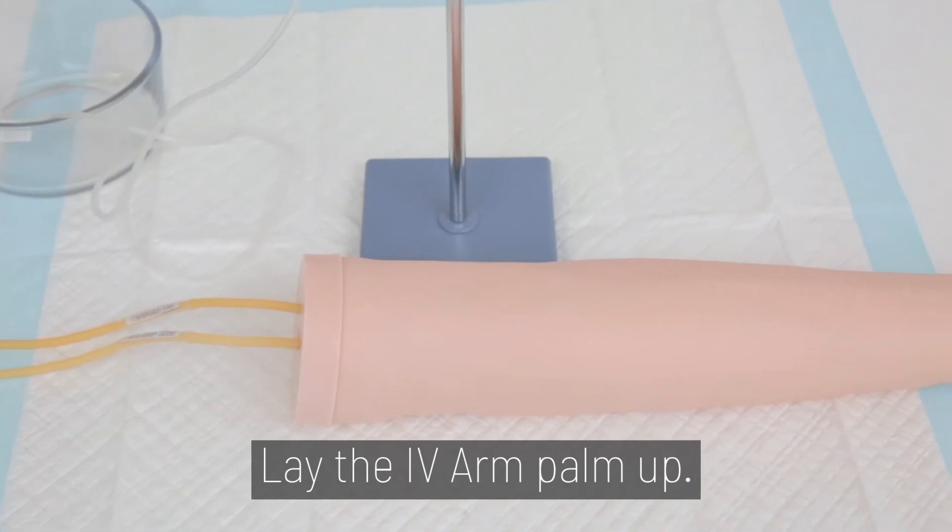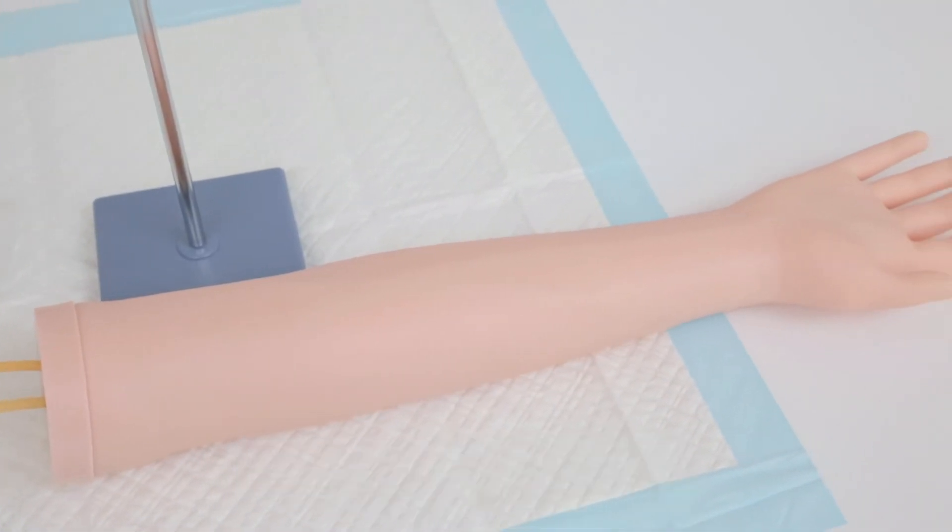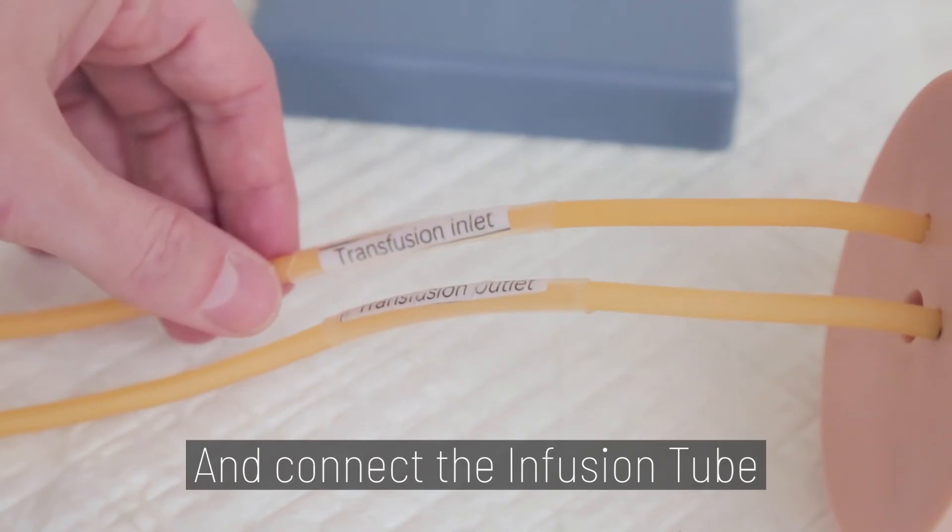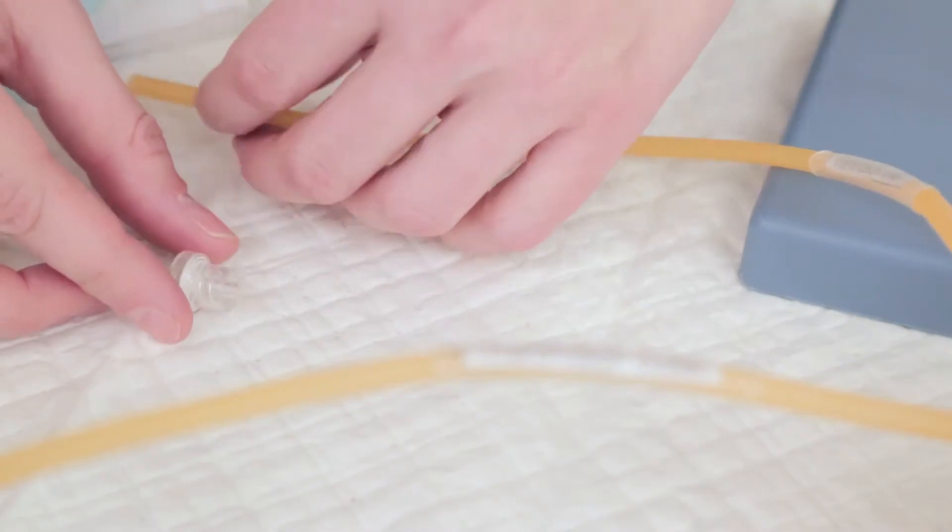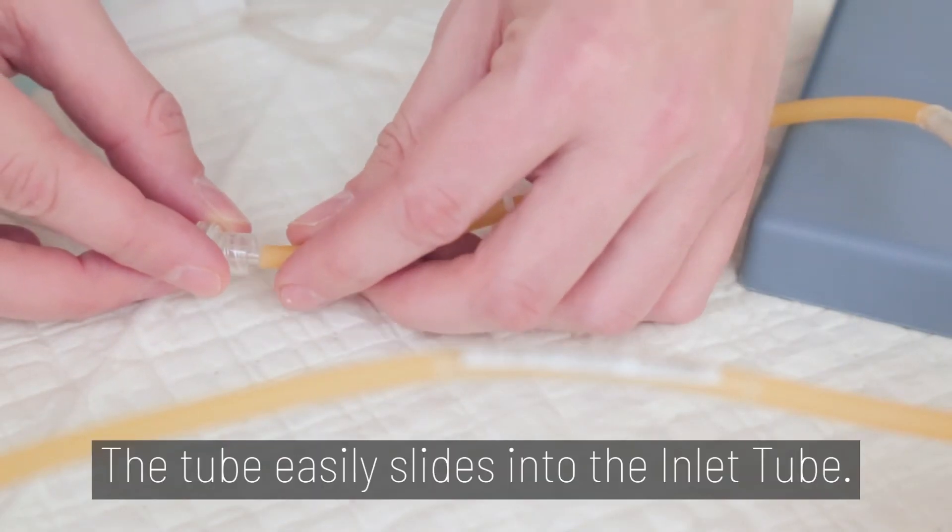Step 4. Lay the IV arm palm up and connect the infusion tube to the transfusion inlet tube. The tube easily slides into the inlet tube.